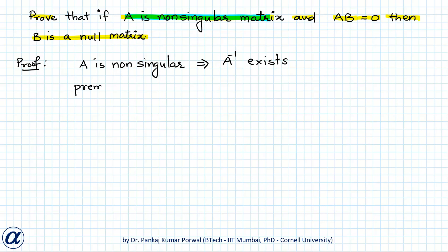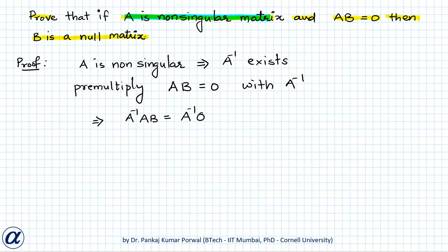Now, pre-multiply AB equals zero with A inverse. We know that A inverse into A will be the identity matrix. So this gives us IB equals A inverse into the zero matrix, which equals the zero matrix. Since I into B is just B, this implies B equals zero. So we have B equals the null matrix, and that's what we wanted to prove.